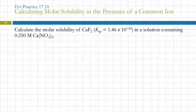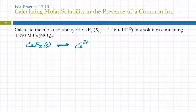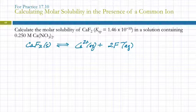Let's calculate the molar solubility of calcium fluoride in a solution containing 0.25 molar calcium nitrate. It's always helpful to start out with looking at the equation. So here we have calcium fluoride in equilibrium with calcium ions and the two fluoride ions.